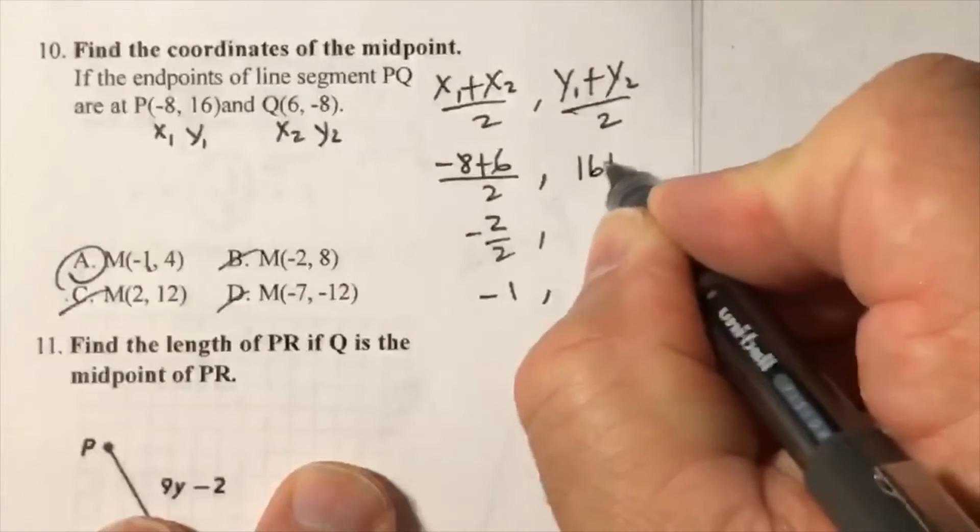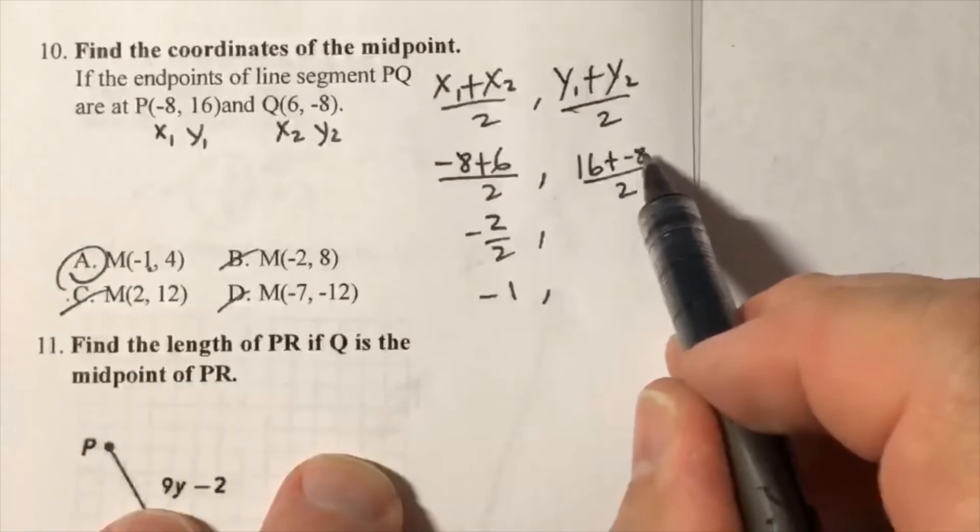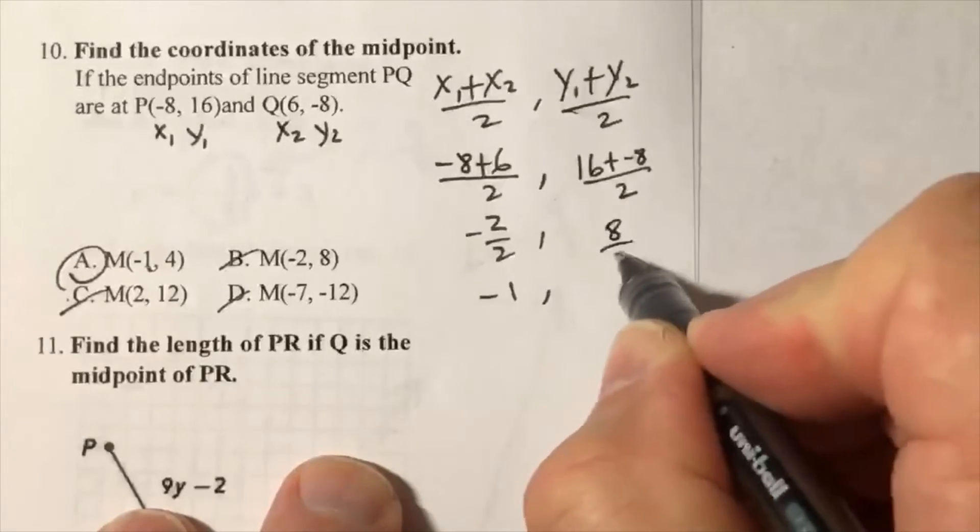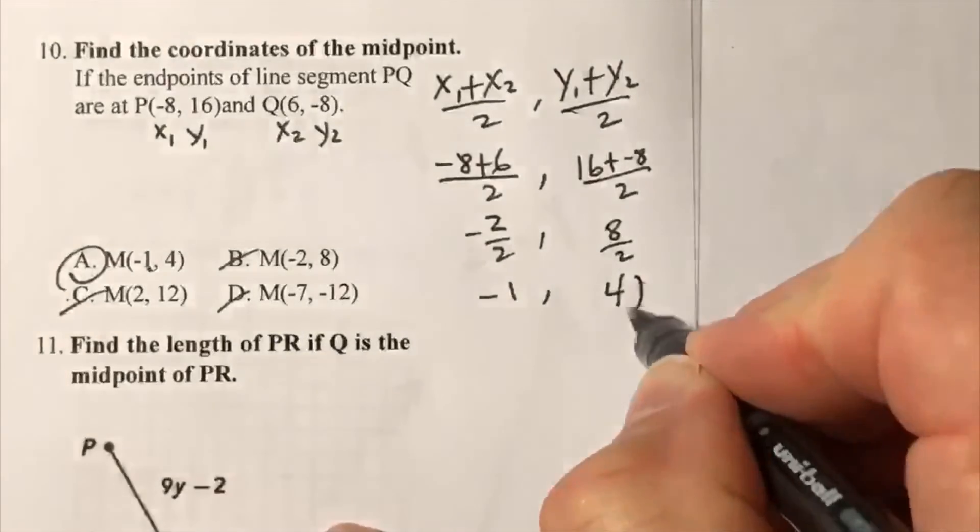16 plus negative 8 divided by 2. This is basically saying 16 minus 8, that's 8, so 8 over 2 is 4. Okay, there's my midpoint.